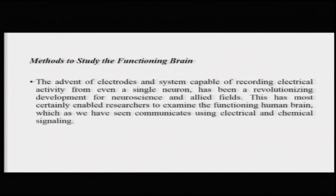Let us now move our focus to some of the methods more involved in studying the functioning brain. We have seen methods for structural analysis of the brain. We can now move towards methods capable of measuring the in vivo functioning of the human brain. The advent of electrodes and systems capable of recording electrical activity — from a bunch of electrodes fitted on a cap, to a single neuron — has been a revolutionizing development for cognitive neuroscience. This has enabled researchers to examine the functioning human brain, which operates through electrical and chemical signaling that can be measured with several methods.